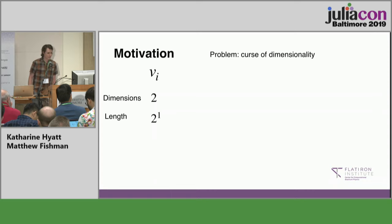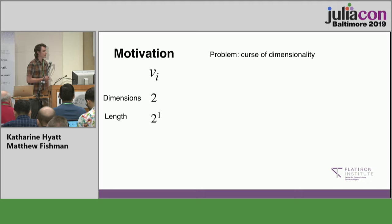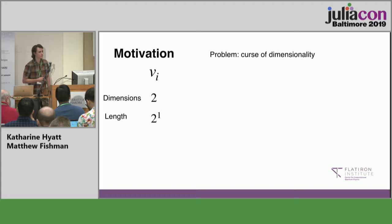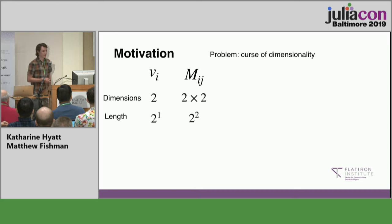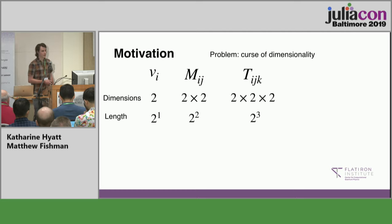You don't need to know all this physics stuff for this talk. What you need to keep in mind is that we're working with really big tensors, and when you work with tensors with many dimensions on a computer, there's the curse of dimensionality. If we start with a vector with a single index of dimension two, we have a length two-to-the-one vector. A two-by-two matrix gives us a length four vector on our computer. An order three tensor that's two-by-two-by-two has eight elements to store.